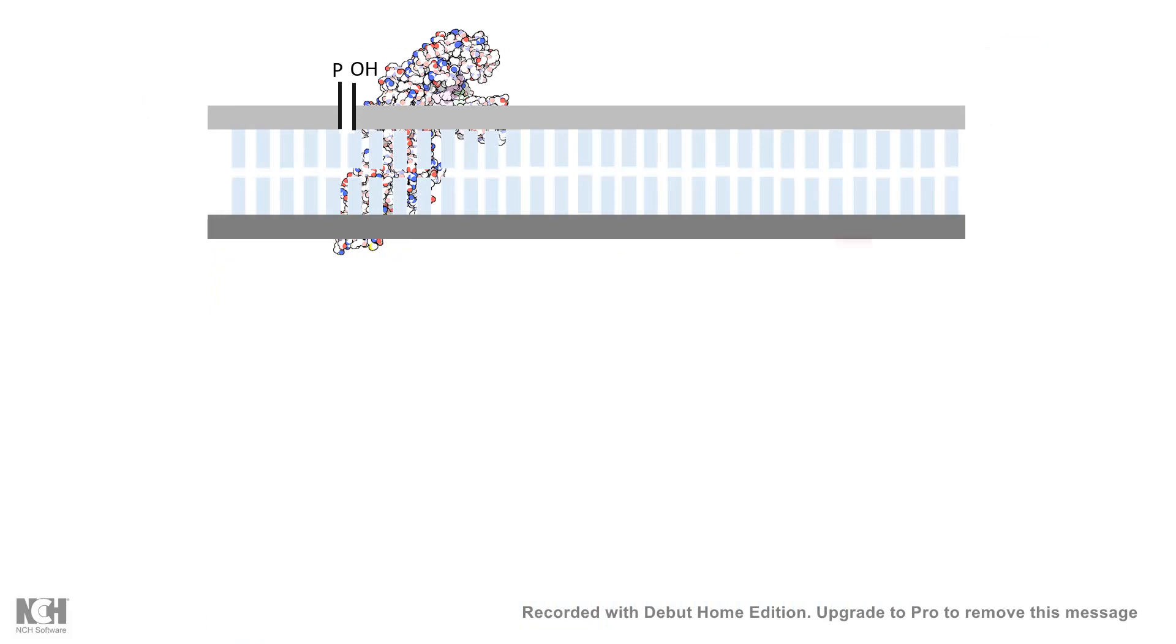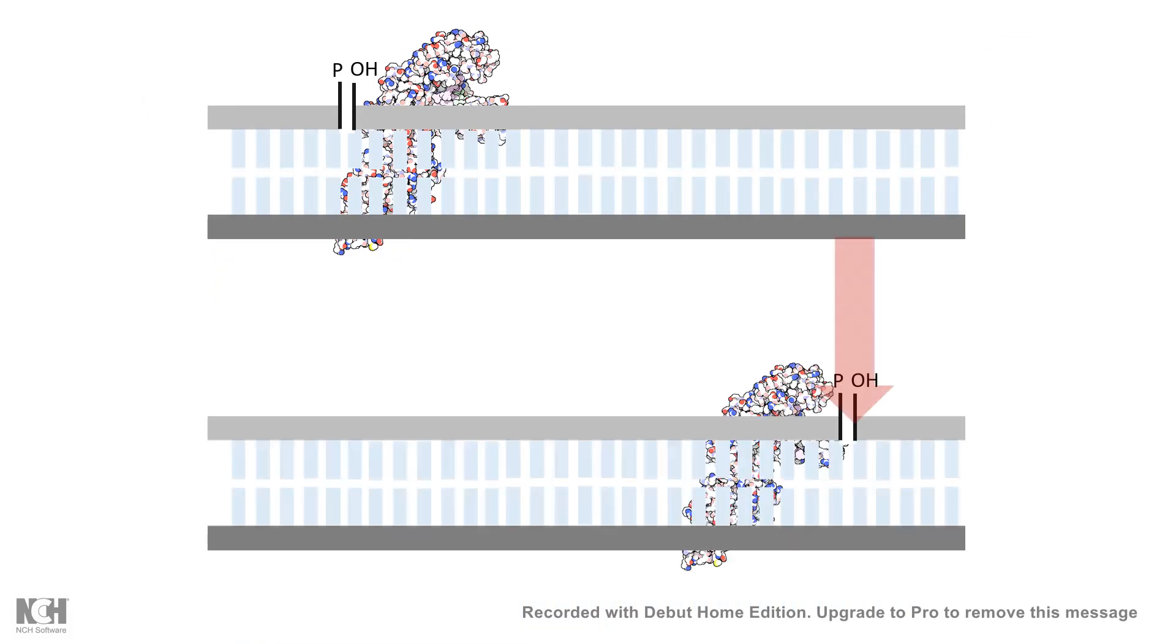And as a result, if you give particular fluorescently labeled or radioactively labeled nucleotides, a portion of that DNA is going to be labeled by the radioactive or fluorescently labeled nucleotide.